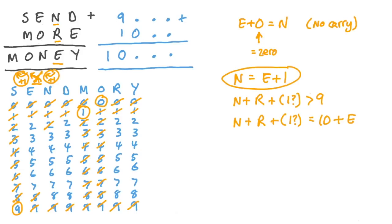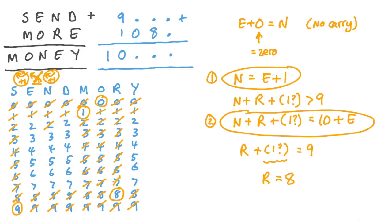Now, we've got two simultaneous equations that we can solve. Subtracting the first from the second gives us r, possibly plus 1, is equal to 9. But remember, s is equal to 9, so r can't equal 9. That means we did have to do this, adding 1 to r to get 9. And that means that r must be equal to 8. And we can fill that out on our grid and working solution. But also remember this, n is equal to e plus 1, and we know that n can't be 8 now, so we also know that e can't be 7. So we can cross that off the grid.